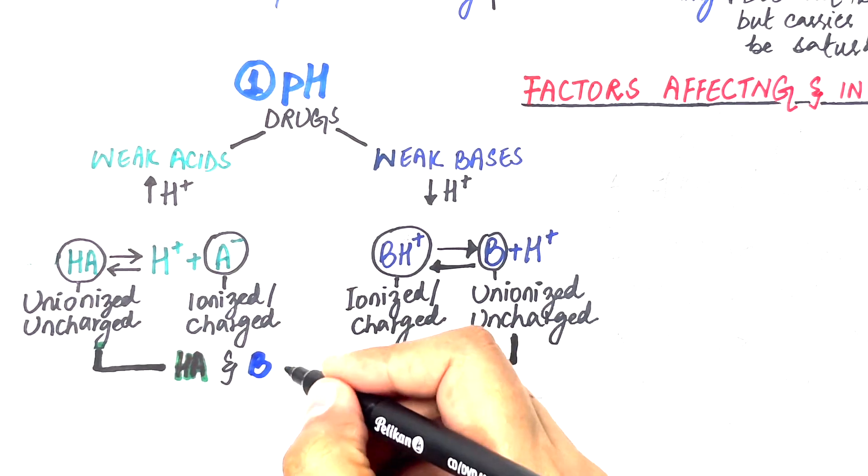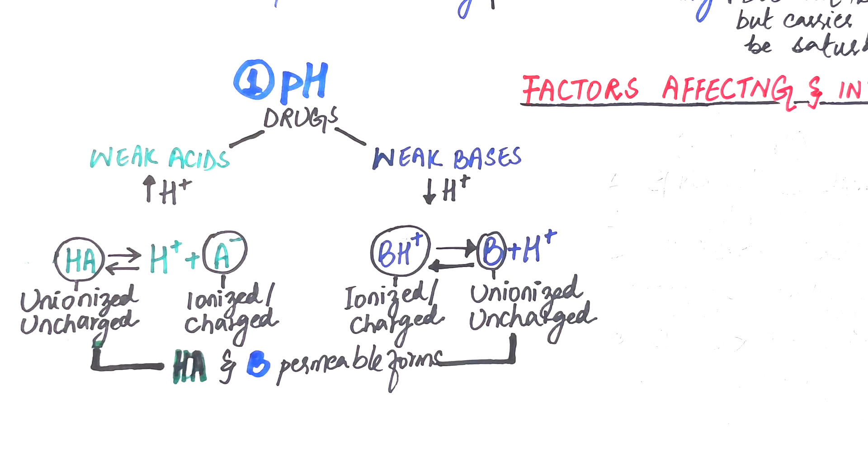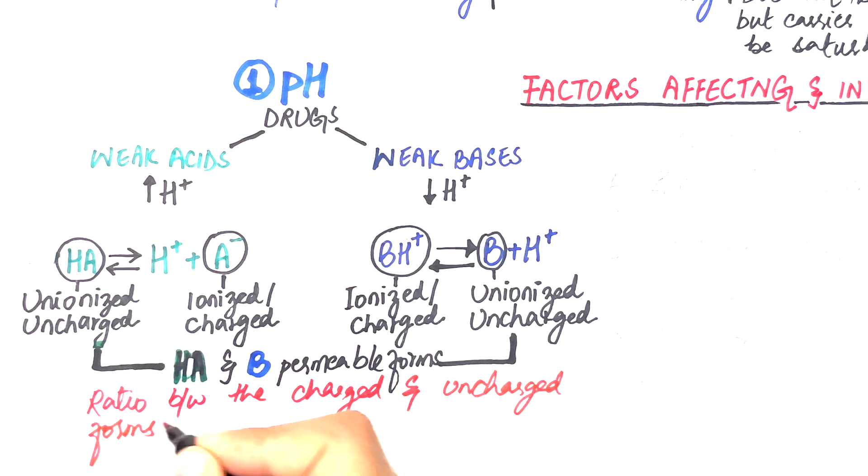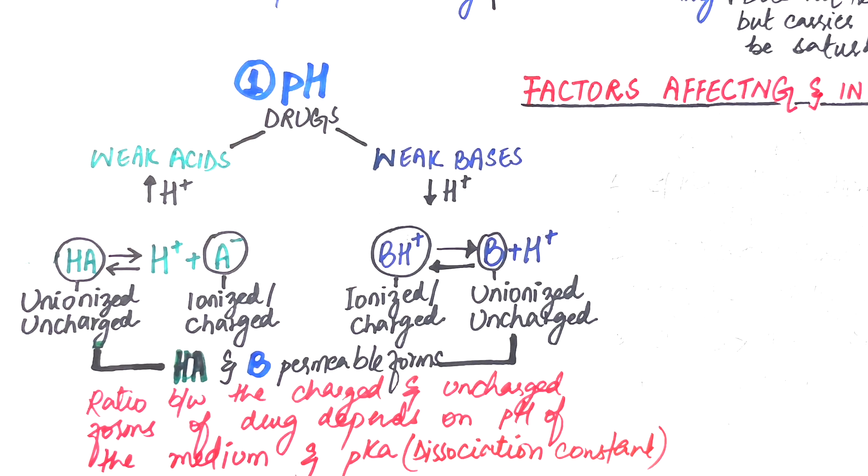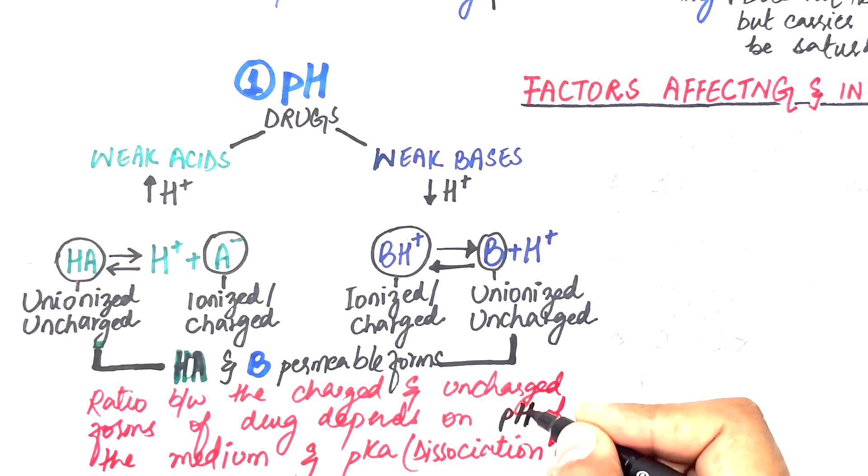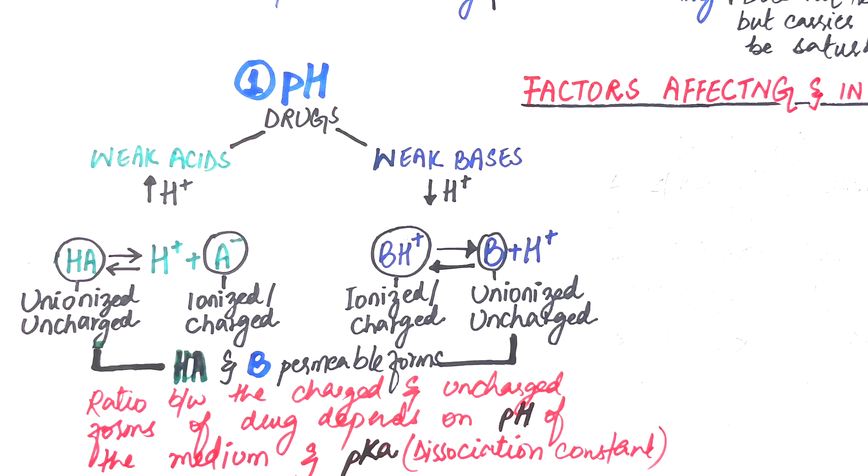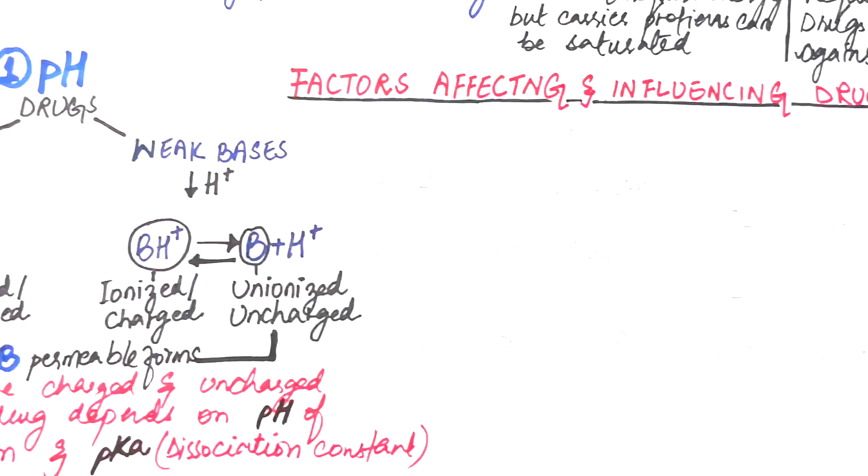The drug, either a weak acid or weak base, once introduced into the body can dissociate both in their charged and uncharged forms. But since we said that only the uncharged, unionized form of the drug has the capability to pass biological membranes, the ratio between the charged and uncharged form of the drug depends on the pH of the medium where the drug is administered and by the strength of a weak acid or weak base which is represented by the ionization constant the pKa.